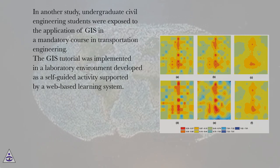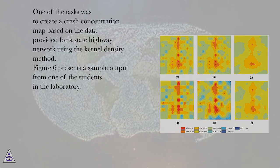In another study, undergraduate civil engineering students were exposed to the application of GIS in a mandatory course in transportation engineering. The GIS tutorial was implemented in a laboratory environment developed as a self-guided activity supported by a web-based learning system. One of the tasks was to create a crash concentration map based on the data provided for a state highway network using the kernel density method.